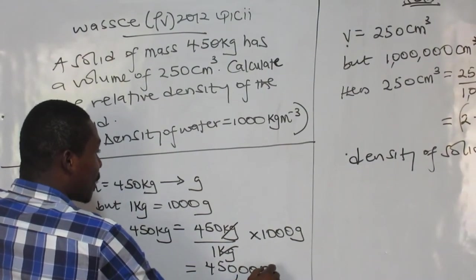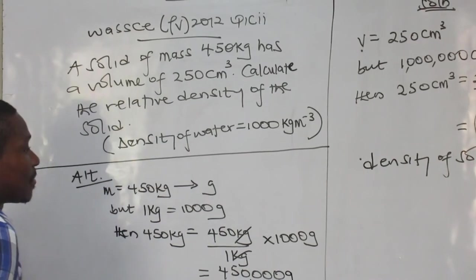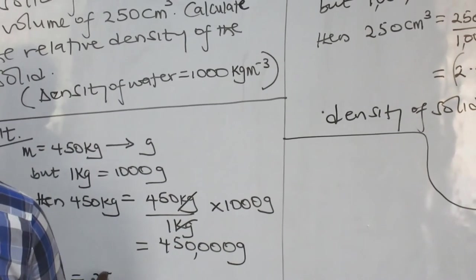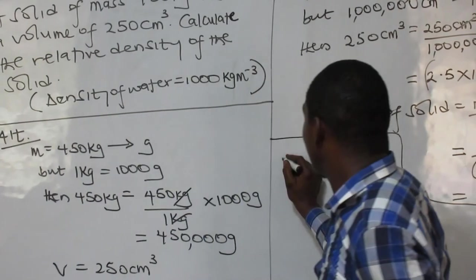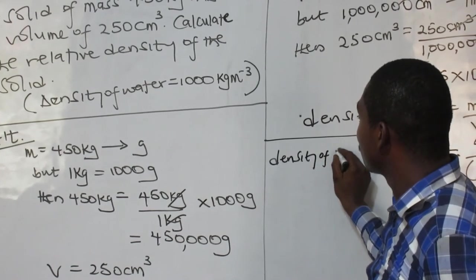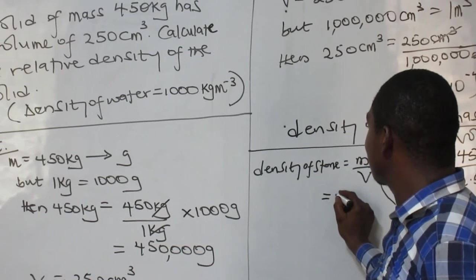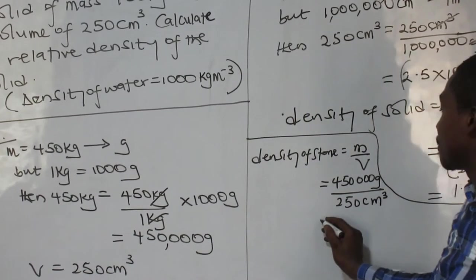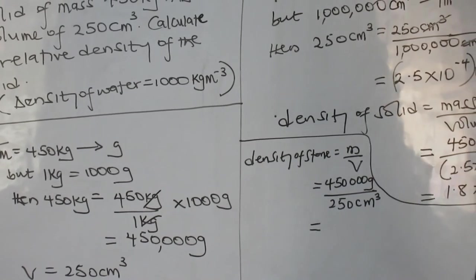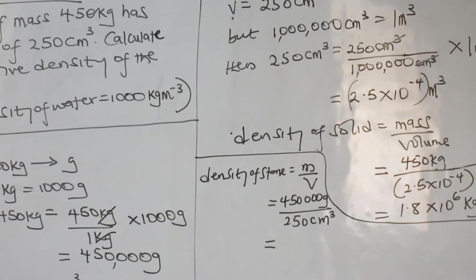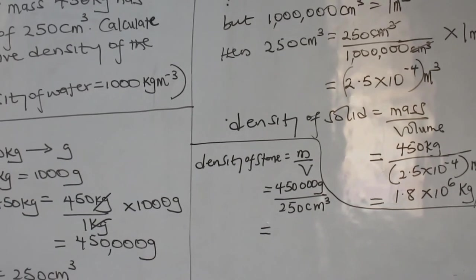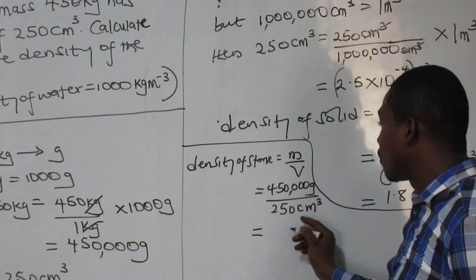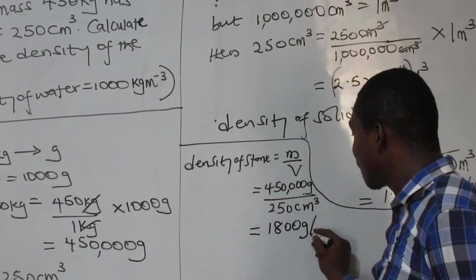So the mass is 450,000 grams and the volume is 250 cm³ — that is fine as it is. Finding the density of the stone: mass over volume gives 450,000 grams divided by 250 cm³, which equals 1800 grams per cm³.